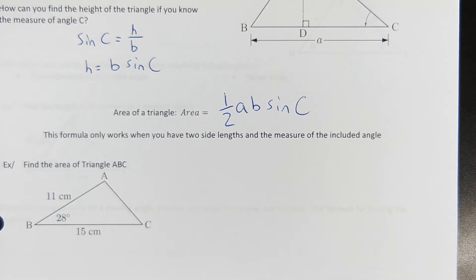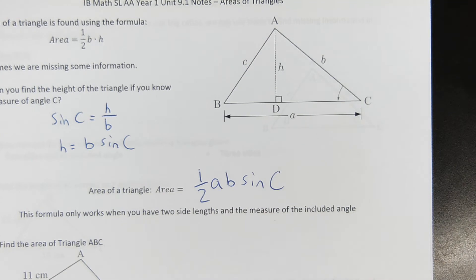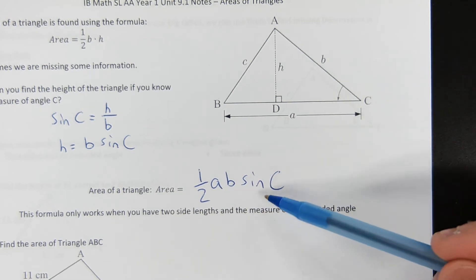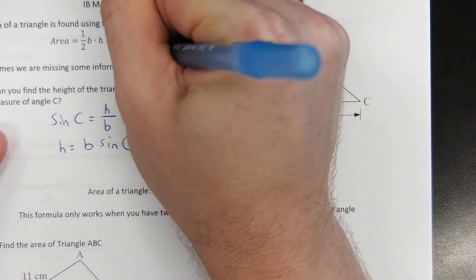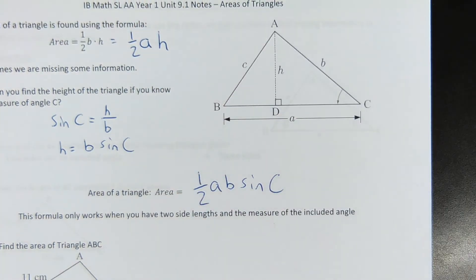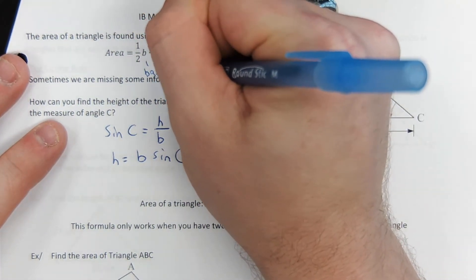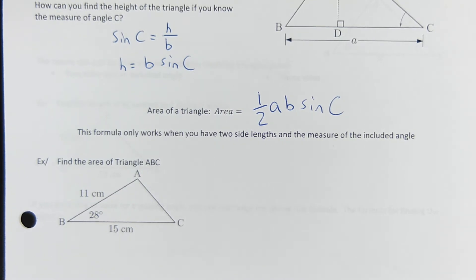The reason why this is lowercase B is because this is triangle A, B, C. I want to use these letters. And this should be one half for this triangle, A, H. It doesn't matter. One half A, B, sine C. That is the formula that's in the reference sheet.